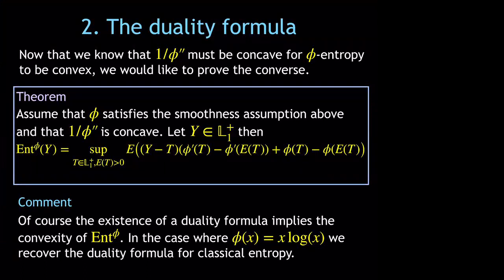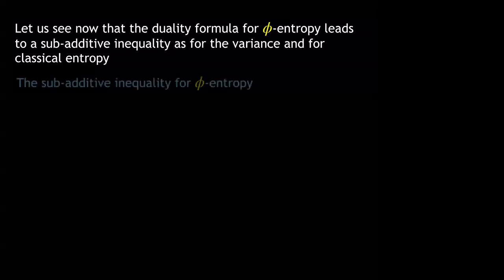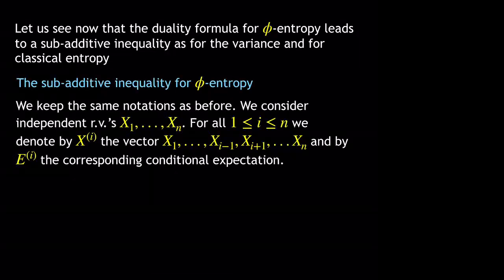After the coffee break, we return to the presentation. Having proved the duality formula for φ-entropy, we now see how it leads to a sub-additive inequality, exactly as for the variance case and the classical entropy case. We recall the notations: x^[i] is the original vector with the i-th coordinate removed, and E^[i] denotes expectation given x^[i].